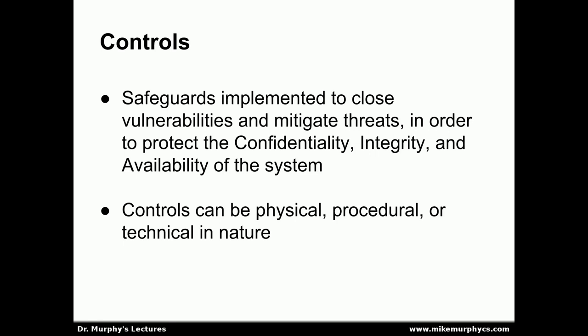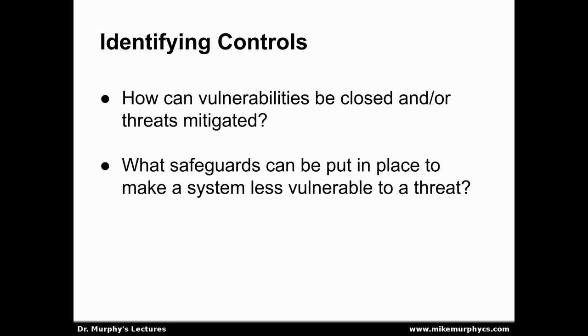We can also have procedural controls. For example, when handling money, it is possible to have a procedure that says two employees have to be present, making it harder for one employee to skim money out of the drawer or safe. In the field of information security or computer security, controls can be technical — we can have system policies in place that prevent certain actions, or we can require data to be encrypted. We need to ask ourselves what vulnerabilities exist to the threats we've identified, and how those vulnerabilities can be closed or mitigated. What safeguards can we put in place to make the system less vulnerable to a specific threat?